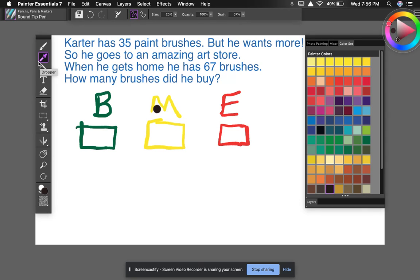So let's think about what we know. Let me try to use this pen tool. All right, so let's go ahead and select green. And what I want to do is circle my information at the beginning of the story. So I know that he has 35 paintbrushes at the beginning. So that's going to be my first number in my equation, 35.